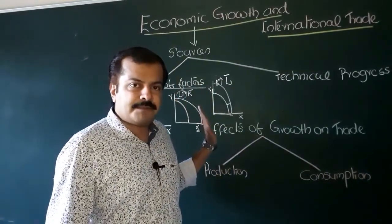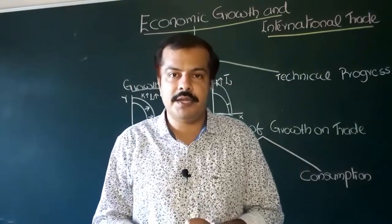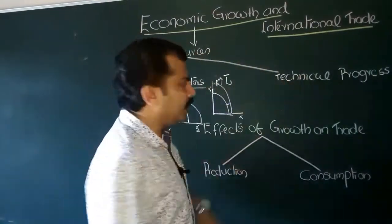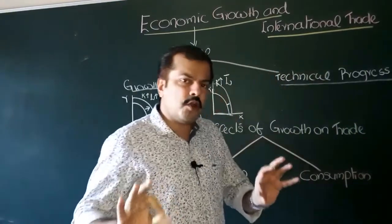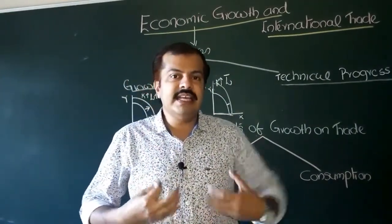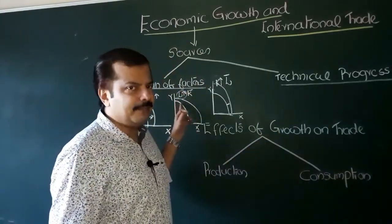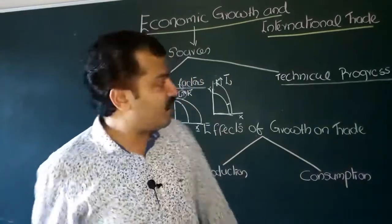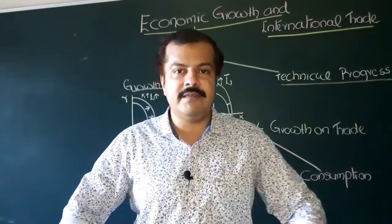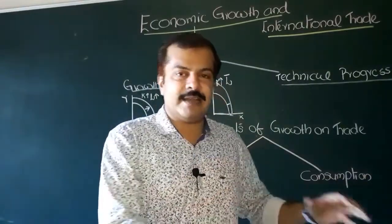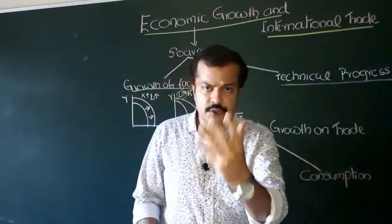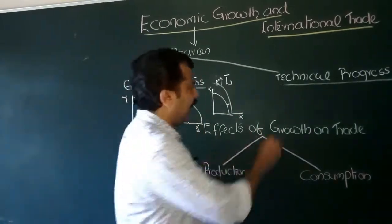Now, with respect to growth of factors of production, let us explore the second source of economic growth, namely technical progress. Most empirical studies have proven that the real source behind economic growth is not the growth of factors of production but rather technical progress. Technical progress means more output will be possible with a given level of input, or a given output will be possible with a lesser amount of input. That means the productivity of factors of production increases — that is the essence of technical progress.